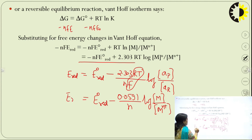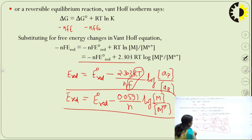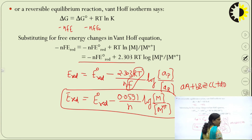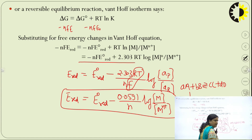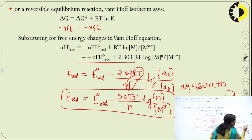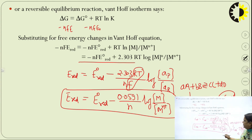For a full cell reaction aA + bB ⇌ cC + dD, the Nernst equation becomes: E = E°cell − (0.0591/N) log([C]^c[D]^d / [A]^a[B]^b), where the log term is the reaction quotient Q. At equilibrium, Q equals K (the equilibrium constant) and E_cell = 0.